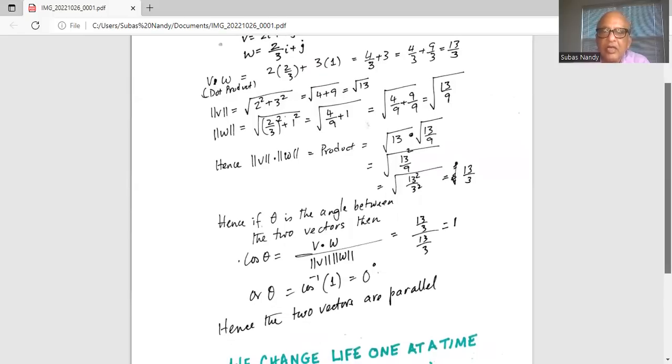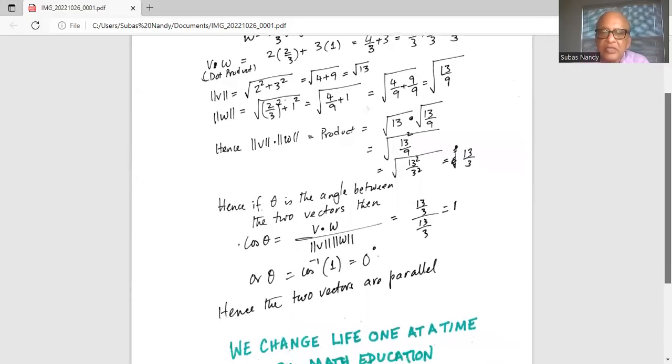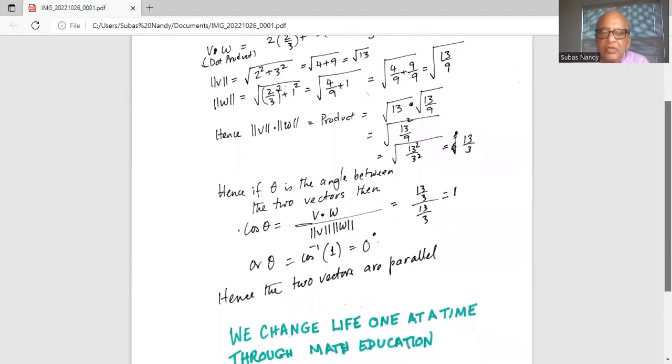Hence theta is cosine inverse or arc cosine of 1. Thus theta is 0 degrees. Hence the two vectors are parallel.